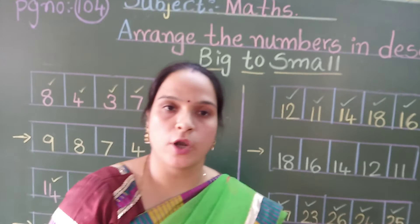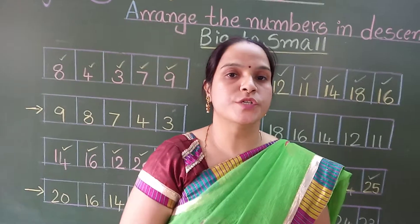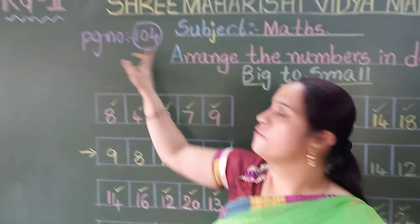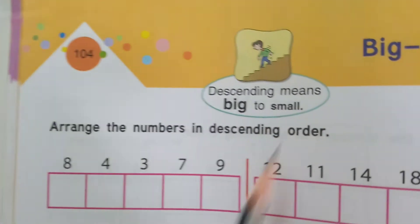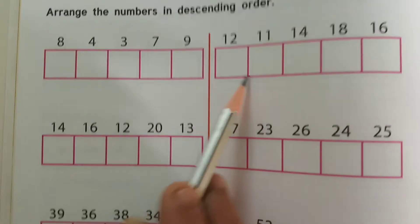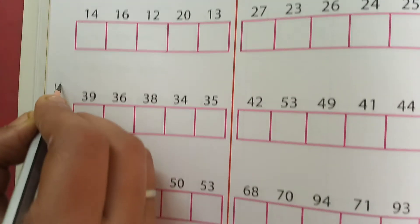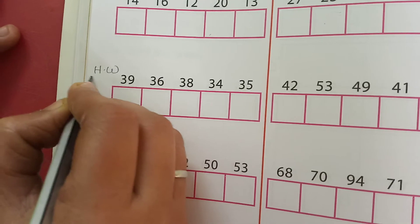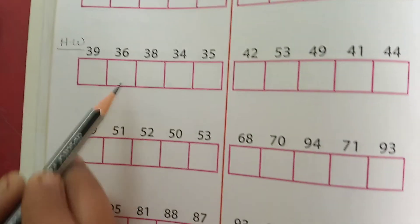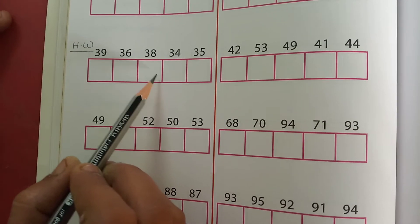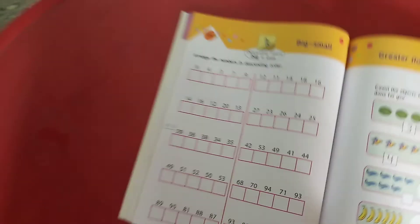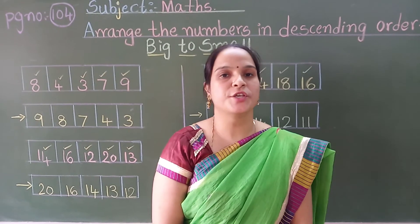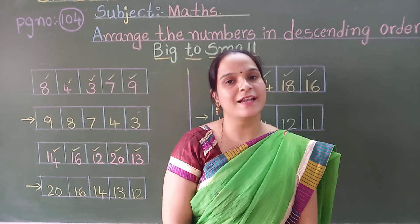Bigger number to the smaller number. So all of you be ready by opening the fusion to textbook page number 104. Descending order — big to small. I have shown how to solve these 4. So write down here H.W. Whenever you watch my video, you have to solve these 6 questions: 1, 2, 3, 4, 5, 6. Okay my dear students. I am going to check your work in the online class. Good day students. Bye bye.